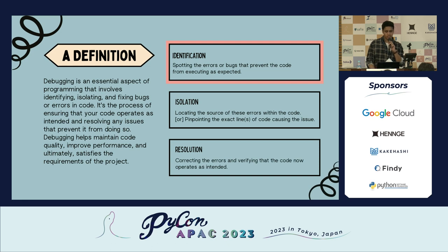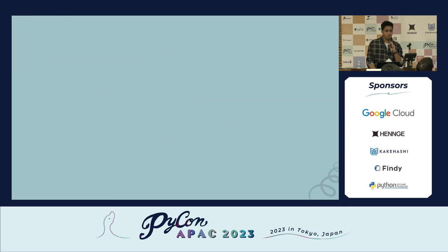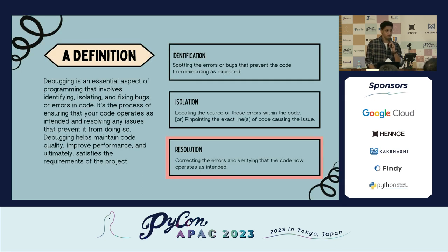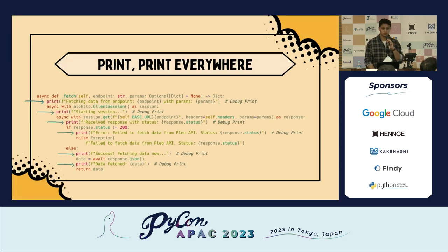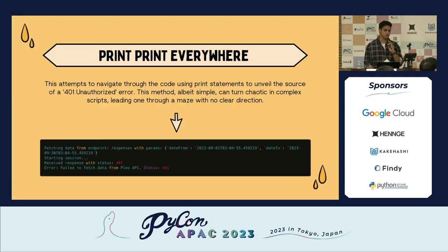Debugging is about identification — finding anomalies and bugs hindering code execution — then isolating the specific section by adding breakpoints, and then finding the resolution. But most developers debug like this: print, print, print — a lot of print statements. The problem is when you're working with a big function that has thousands of nested functions calling each other, it's going to be chaos.